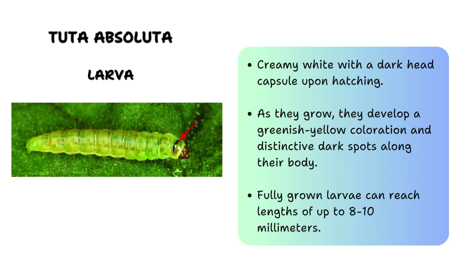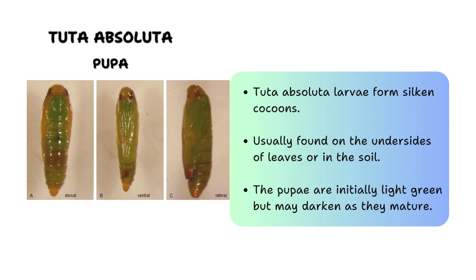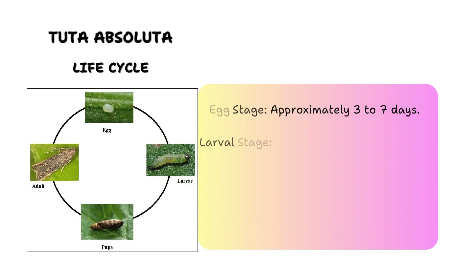The pupa of Tuta absoluta is typically enclosed within a cocoon spun by the larva using silk and plant material. The pupa itself is relatively small — about six to eight millimeters in length — with a brownish coloration. Inside the pupal case, the insect undergoes metamorphosis, transforming from the larval form into an adult moth. The pupal stage lasts approximately seven to ten days depending on environmental conditions such as temperature and humidity.